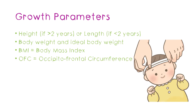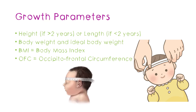The occipitofrontal circumference is the circumference of the baby's head at its widest part. We measure it parallel to the floor, at a level connecting the supraorbital ridges and the external occipital protuberance just above the ears. OFC is usually measured up till about three years, because it's a measure of brain growth, and the brain size usually stops increasing around that age. In an acute situation, these parameters are unlikely to be affected, but it's still important to check them.